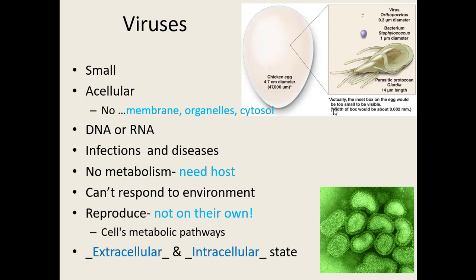Viruses are also acellular — they are not a cell. They don't have a cell membrane that they make, though sometimes they can steal one. They don't have cytosol or organelles like cells do. They can have either DNA or RNA as their genetic material, and so we split viruses into two chapters based on which type they carry. Even though they're acellular and extremely tiny, they can cause infections and diseases in humans, animals, plants, fungi, and even bacteria can get a viral disease.